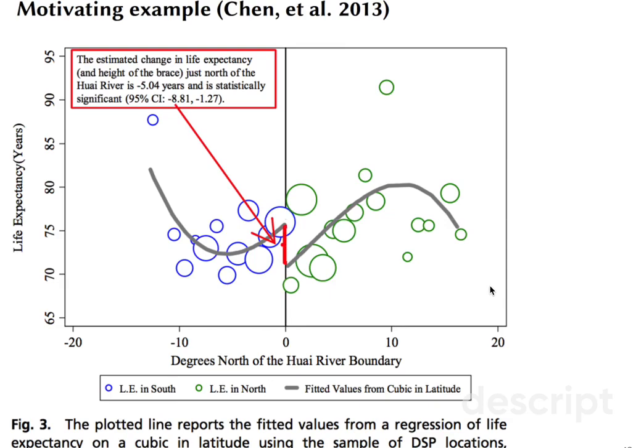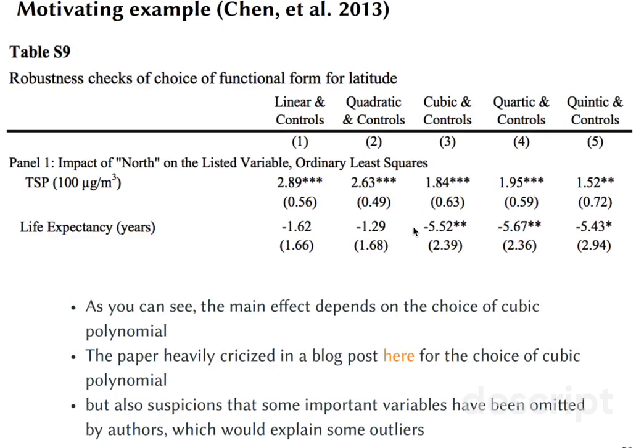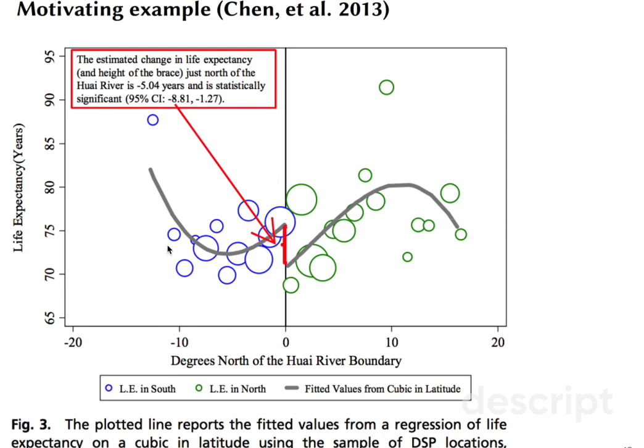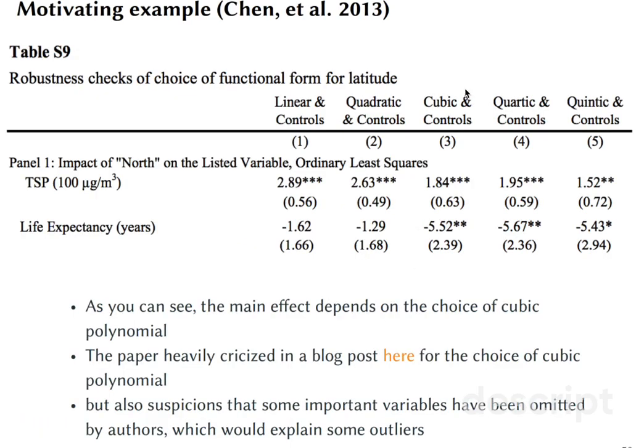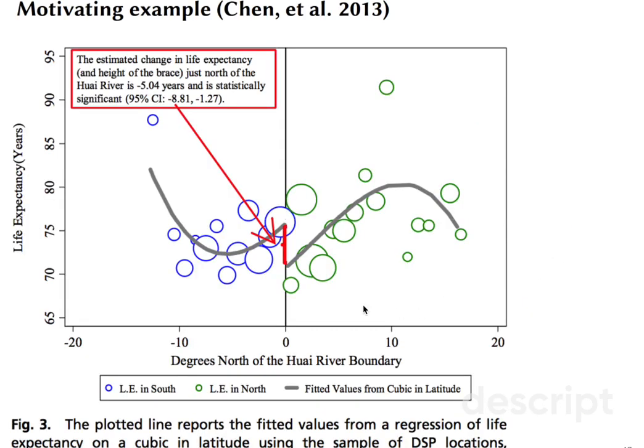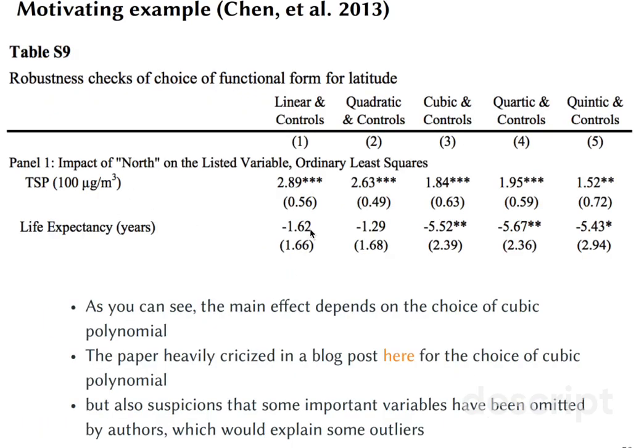They found that the estimated change in life expectancy was five years, and this difference was statistically significant. Now, if you look at the robustness checks, you would see that the results actually differ whether they use linear or quadratic smoothing functions for the distance to the Huai River, as opposed to cubic, quartic, or quintic. When they use more flexible polynomials, they find significant effect; otherwise, they don't find any significant difference.